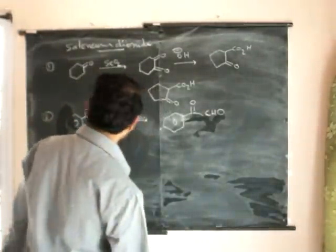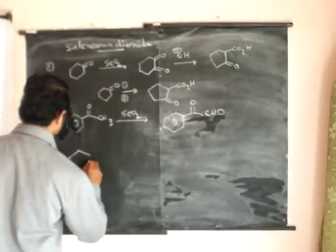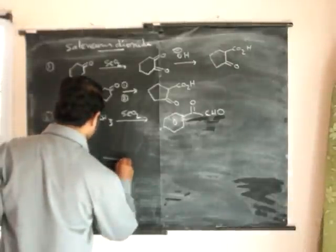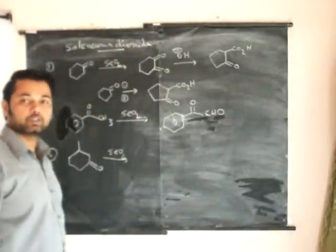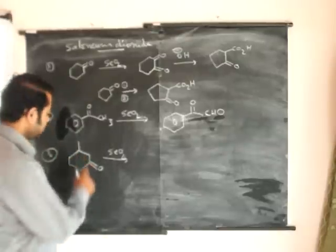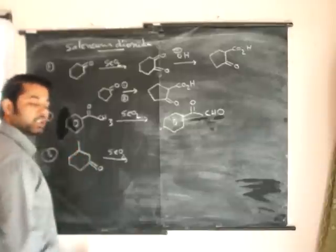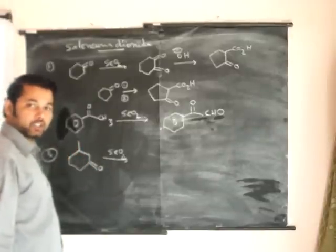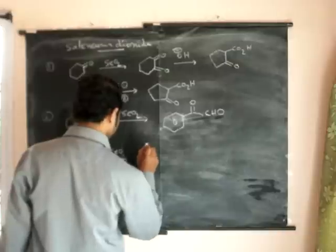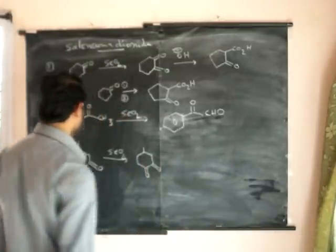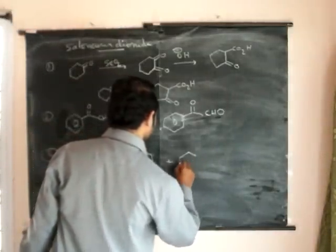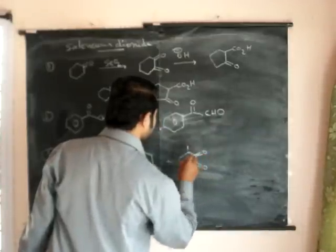The third example: if we have this compound and treat it with selenium dioxide, there are two positions possible. Two active methylene compounds are there. This position is sterically crowded compared to this carbon, so preferentially selenium dioxide oxidizes this less crowded carbon. This compound is major and this compound is minor.